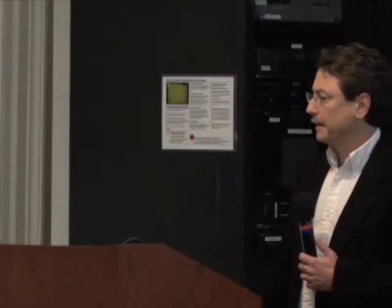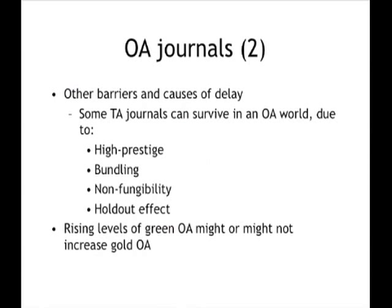One reason it may not come soon is that some toll access journals can coexist with open access journals. I think very high-prestige journals might continue to charge subscriptions forever because of their high prestige — they will be must-have journals just about everywhere. If there's a general trend for journals to convert, the high-prestige journals could be the last holdouts. Many second-rate journals can be protected from this pressure to convert by virtue of bundling. I think one of the purposes of bundling is to protect second-rate journals from cancellation — so they can coexist with open access journals regardless of the rising pressure on them to convert.